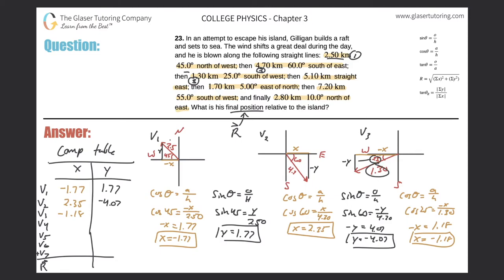For the y-component of V3: I know the hypotenuse, know the angle, looking for the opposite side — use sine. Sine of 25° equals negative y over 1.30, so negative y equals sine of 25° times 1.3, giving 0.549. Enter negative 0.549 in the y-column for V3.